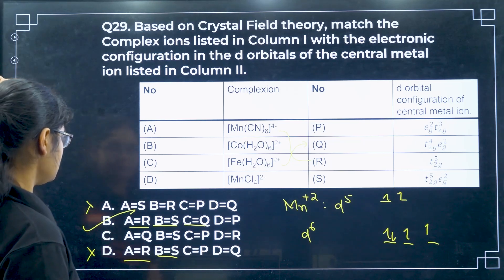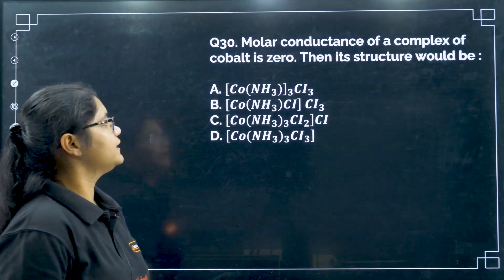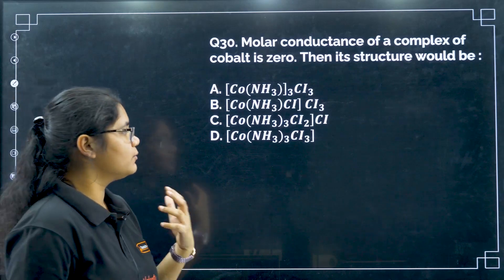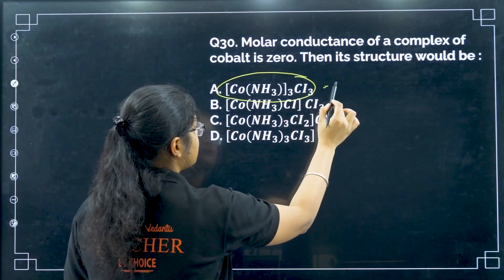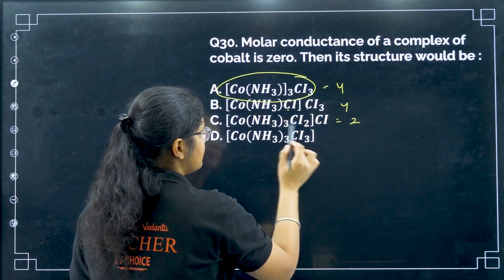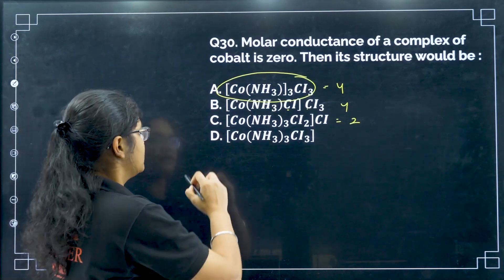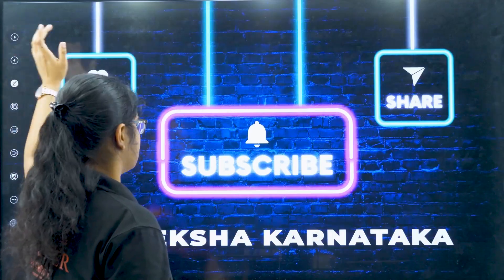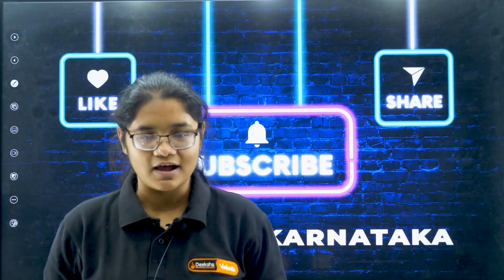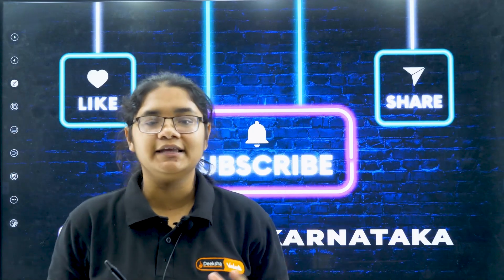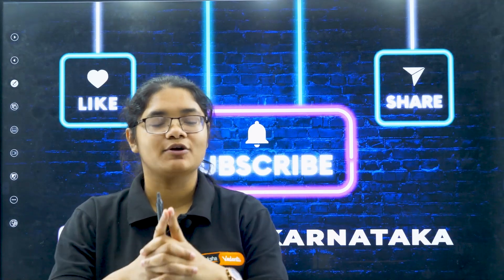Question 30: the molar conductance of a cobalt complex is 0, so the number of ions produced is 0. Looking at the options: some produce 4 ions, some produce 2 ions, but the correct structure produces only one complex with no separate anions — that is why option D is correct. These were the top 30 questions from Coordination Compounds. Very easy questions are generally asked, so you can solve this chapter very easily. Comment any doubts, all the best for your competitive examinations, and do not forget to subscribe.